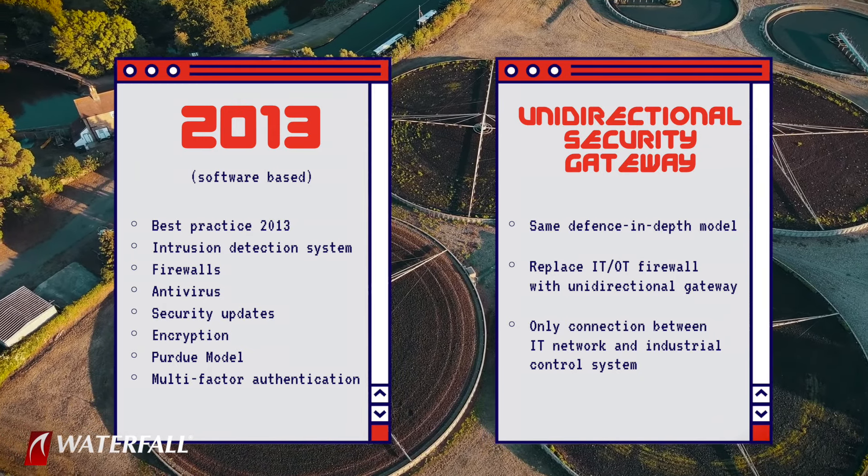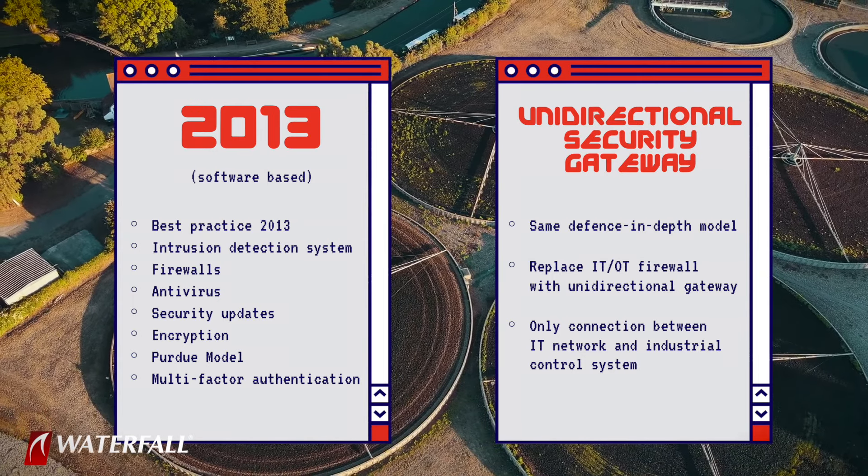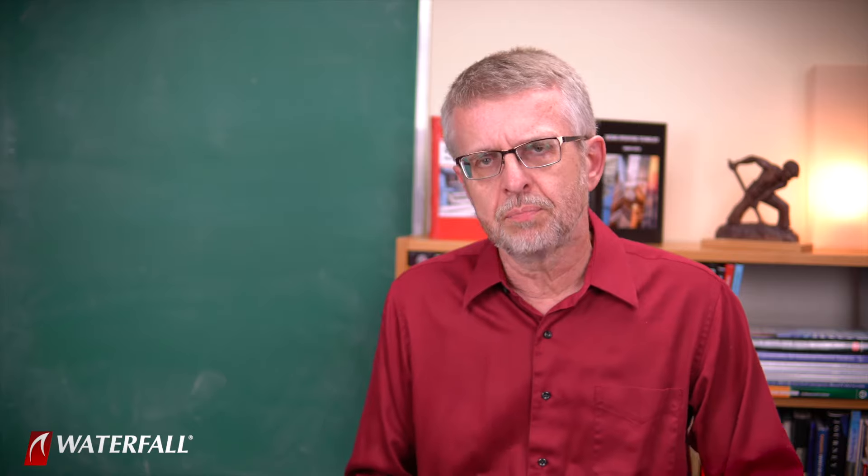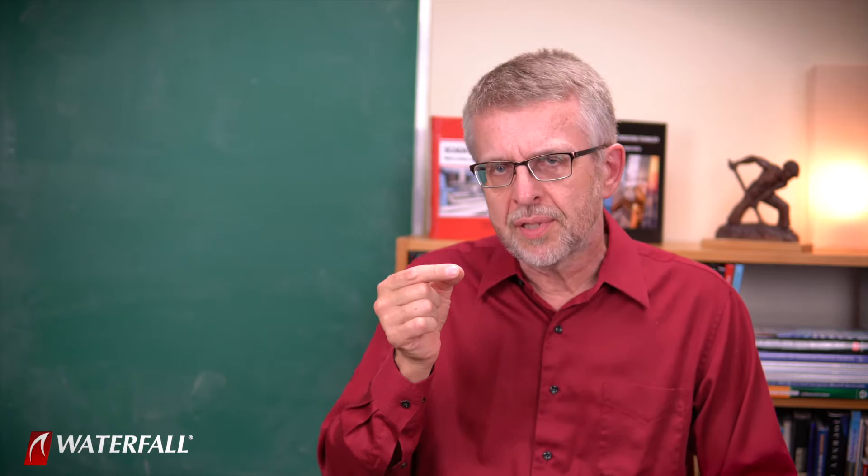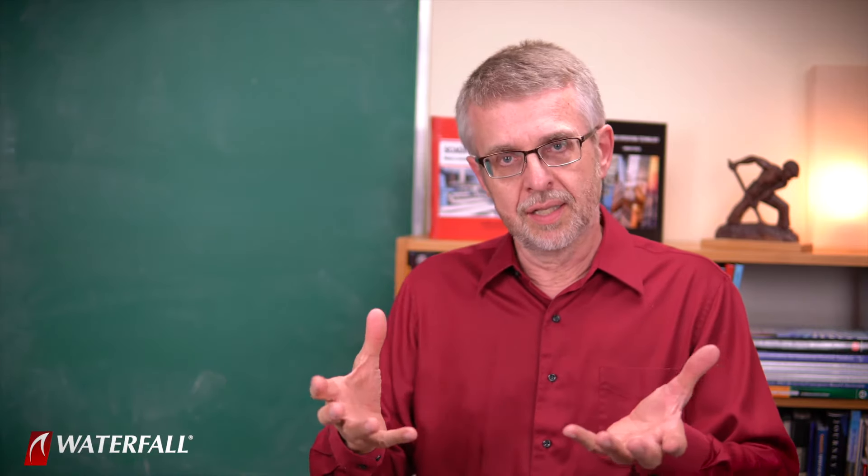Now, the only way to connect from the industrial network to the world is through this unidirectional gateway. Today's attack is number 10, a cellular Wi-Fi scanner. At Waterfall, we work with some of the world's most secure industrial sites. These sites are deeply suspicious of wireless networks. Why? Because of this kind of attack I'm about to describe.